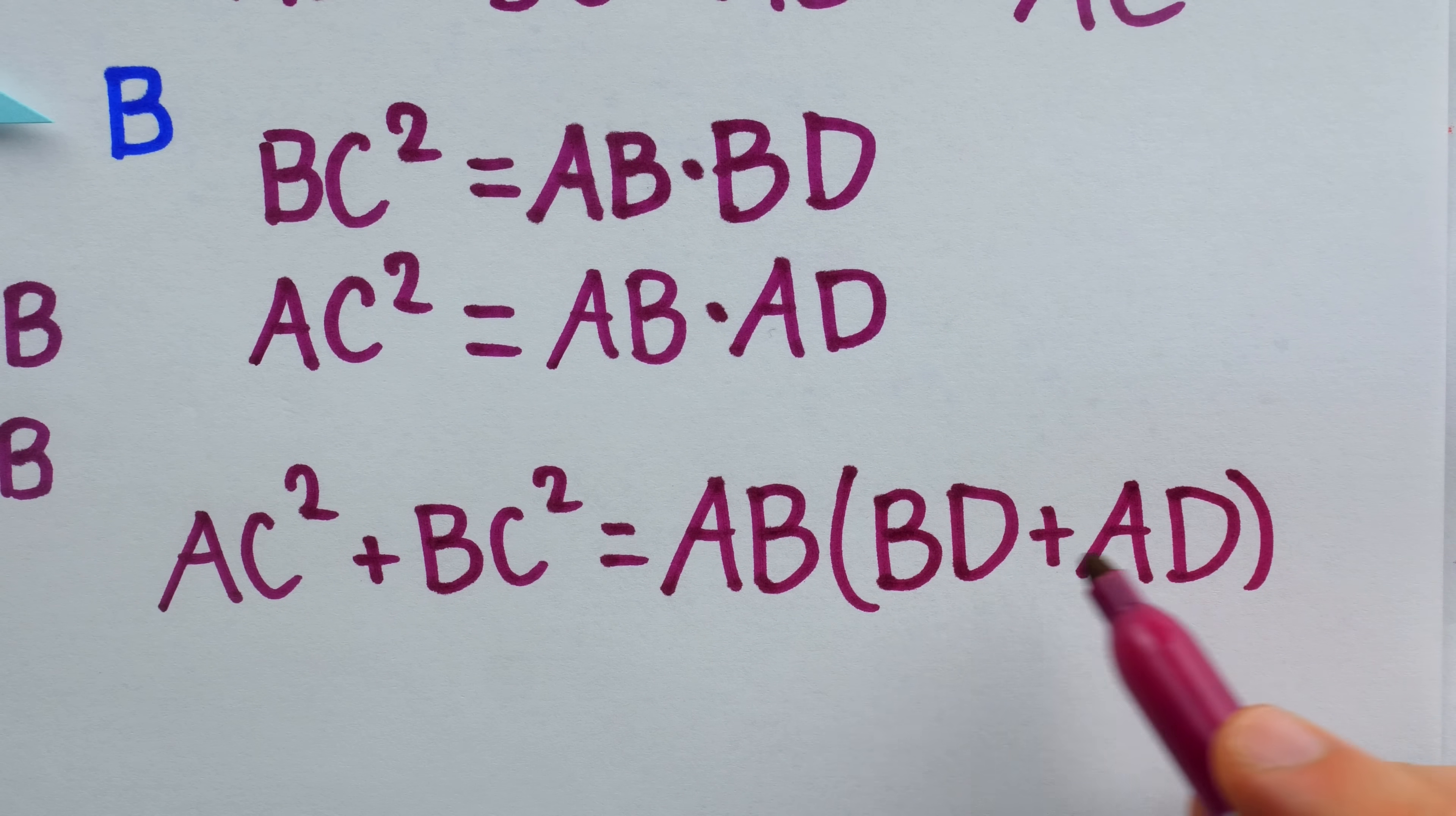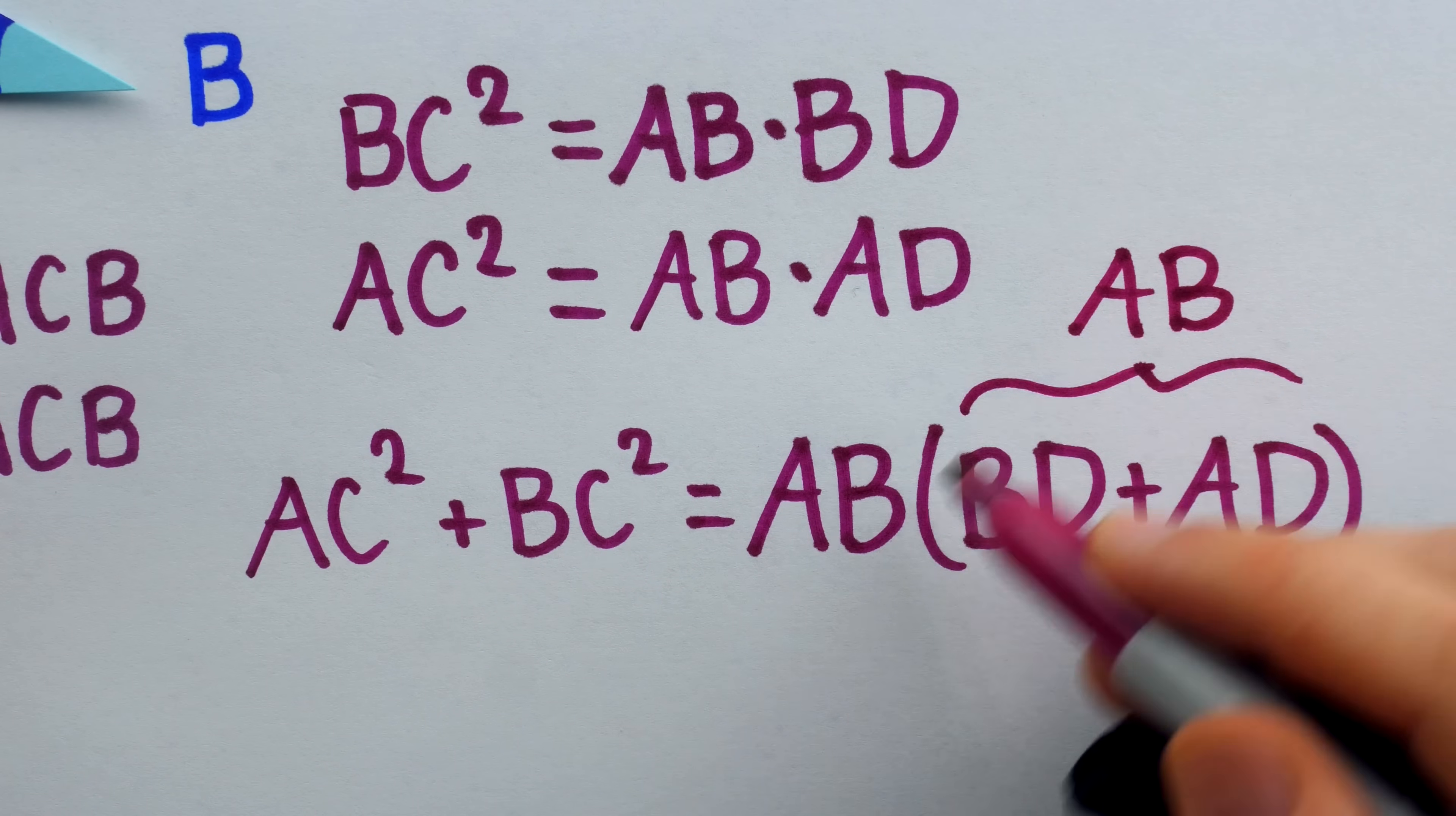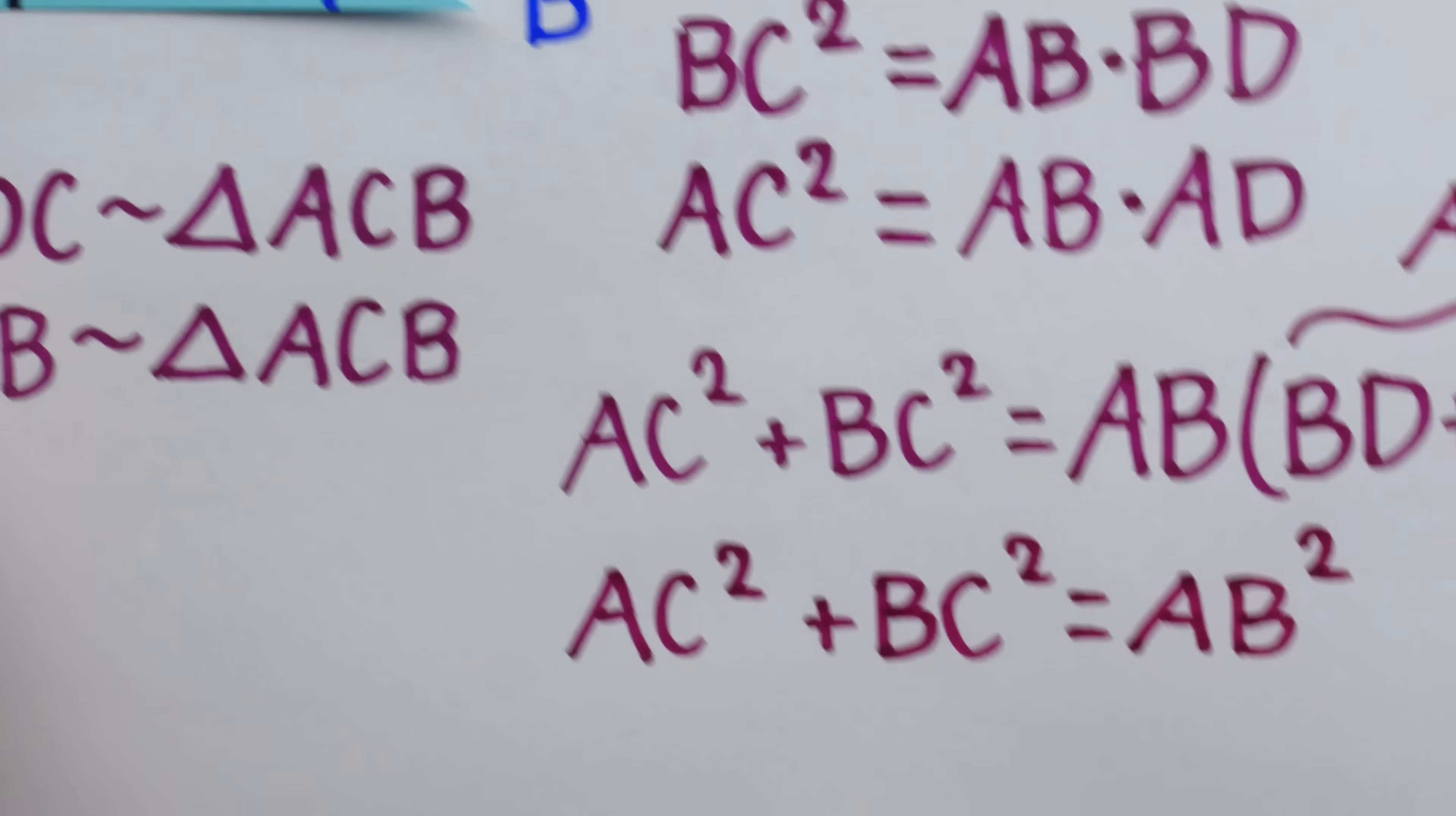So on the left side, we're going to have AC squared plus BC squared. You can see that we are getting warmer. And on the right side, we're going to factor out an AB from that sum. So we have AB multiplied by BD plus AD. But what is BD plus AD? Well, going back to our triangle, BD plus AD is, in fact, the hypotenuse of the big right triangle, AB. So this is actually AB times AB. Wouldn't you know it, it's actually AB squared, thus establishing the Pythagorean theorem.